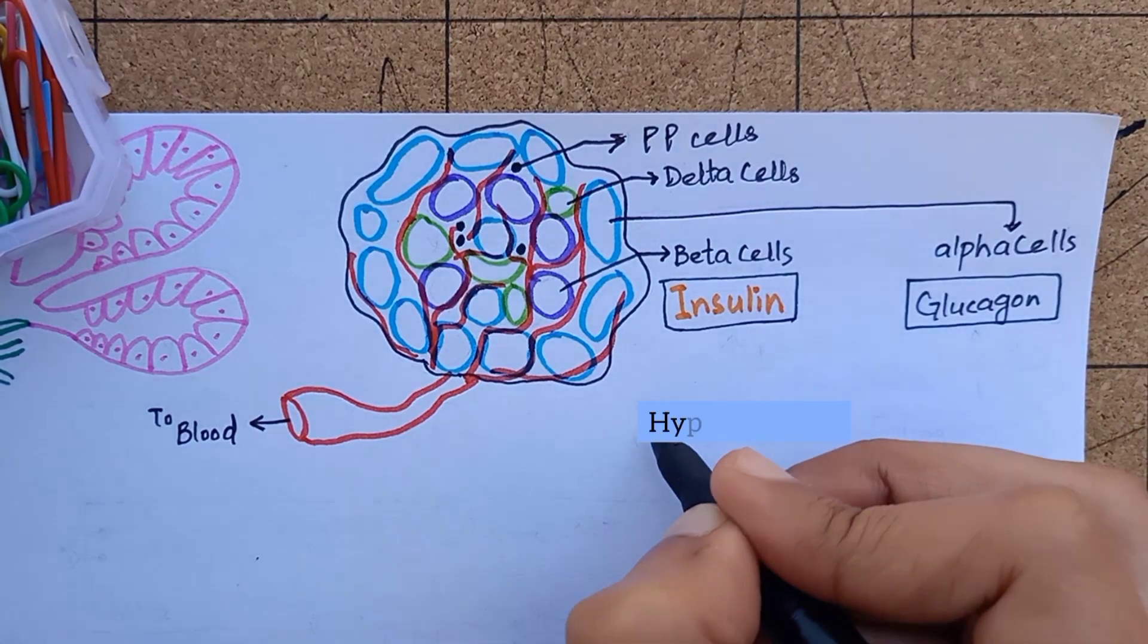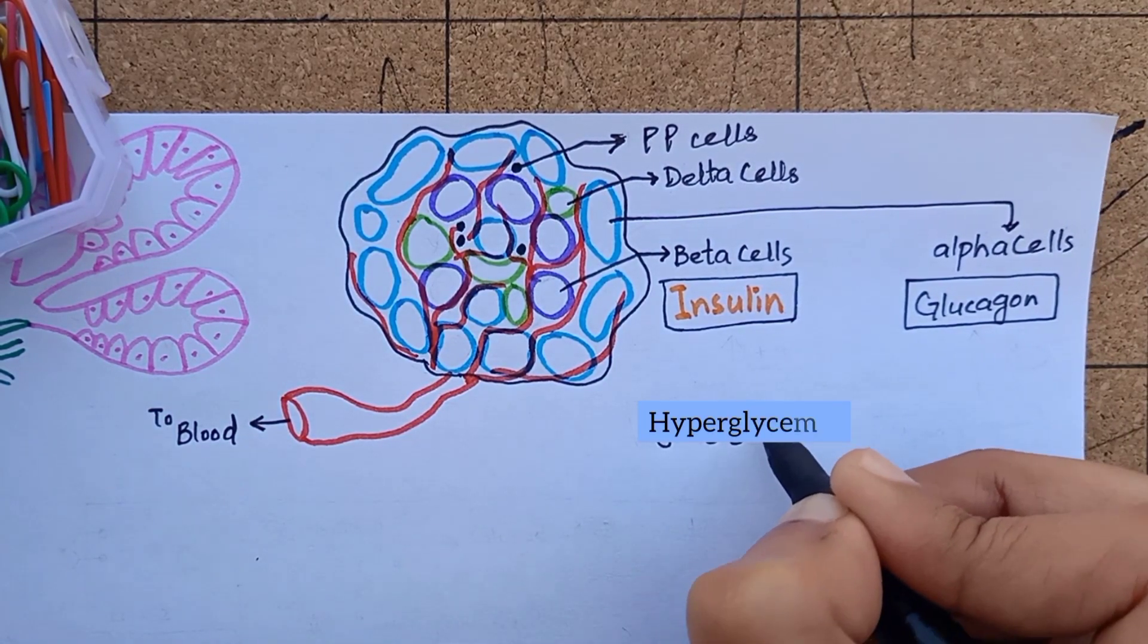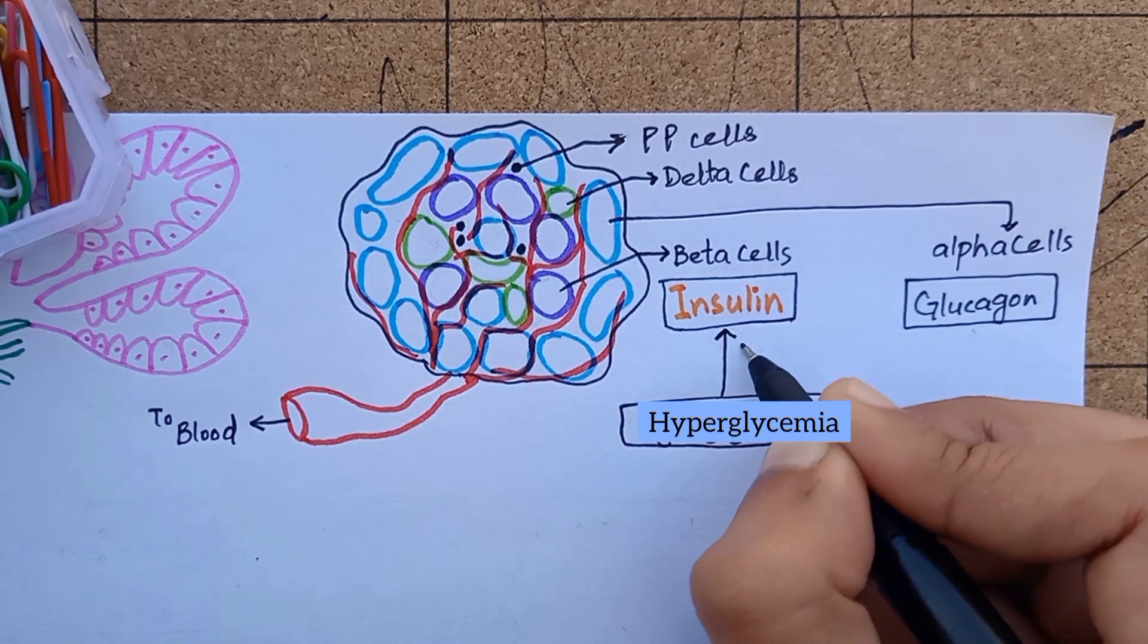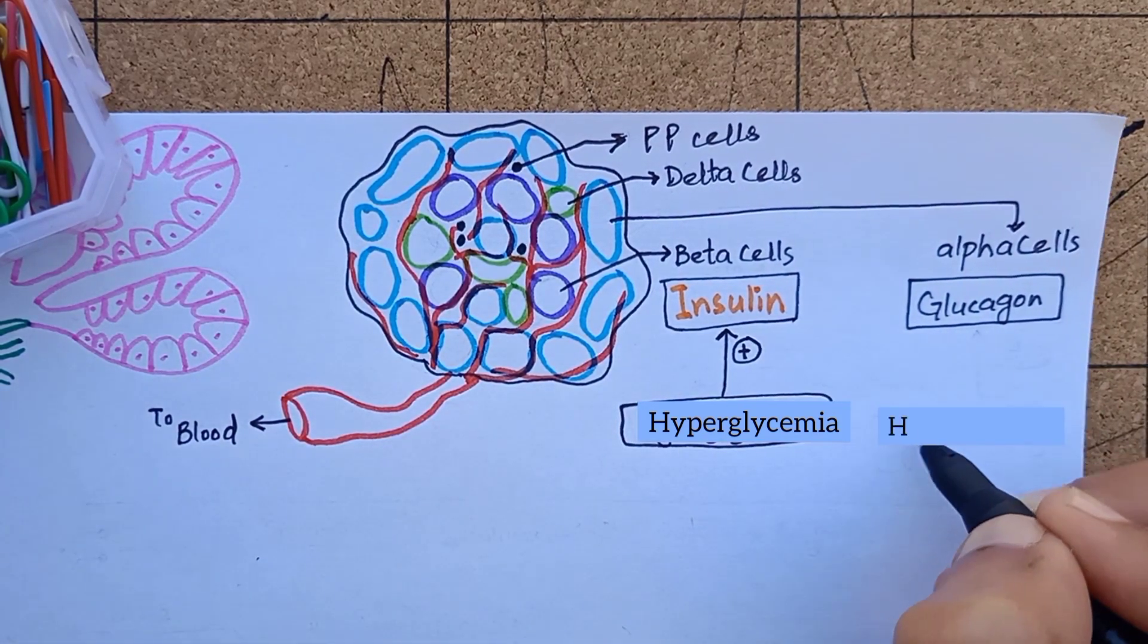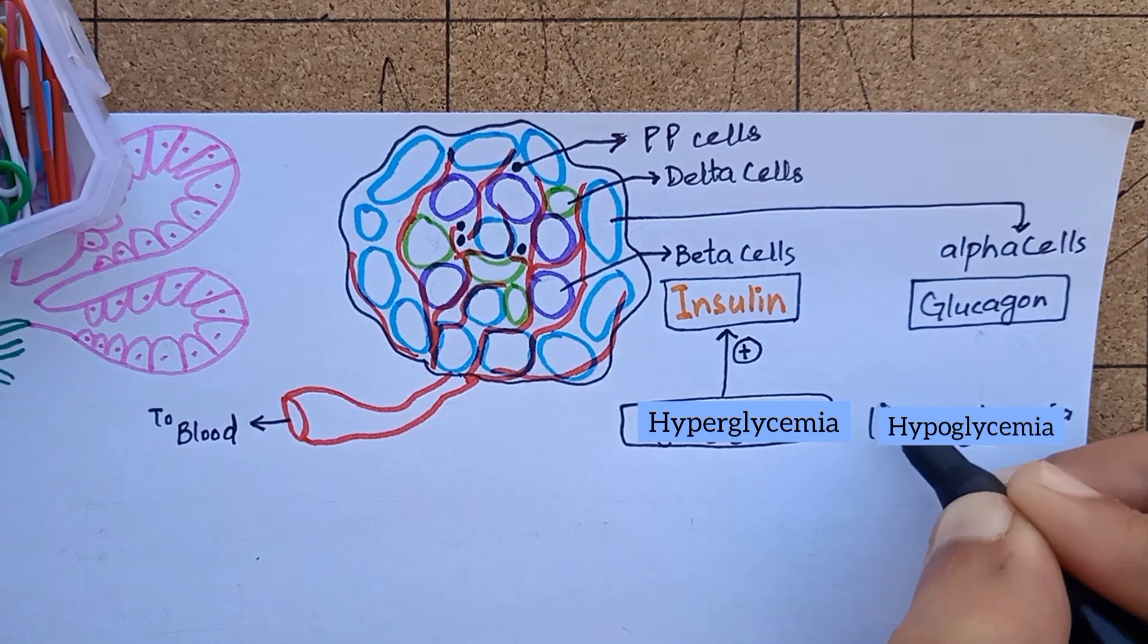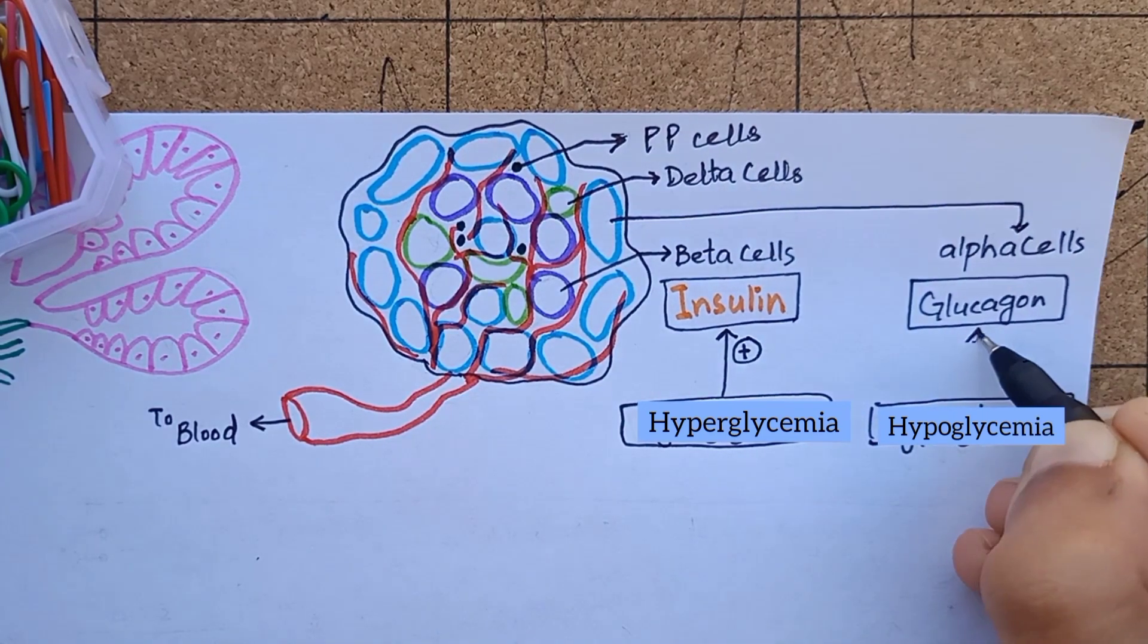So in general, insulin is a hormone that decreases blood glucose concentration. So its stimulus is hyperglycemia. While glucagon is the exact opposite, it increases blood glucose concentration. So its stimulus is hypoglycemia.